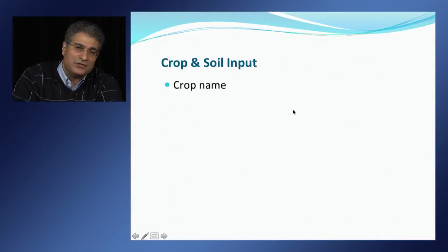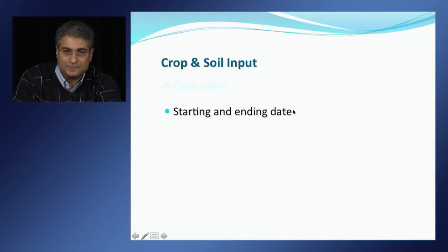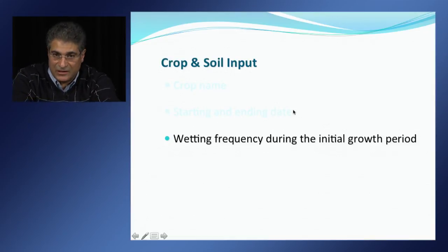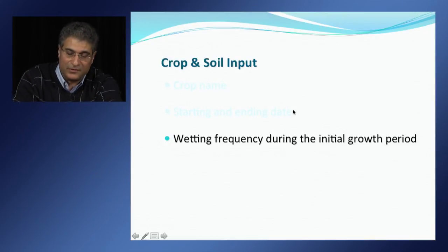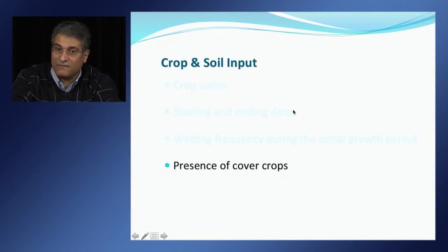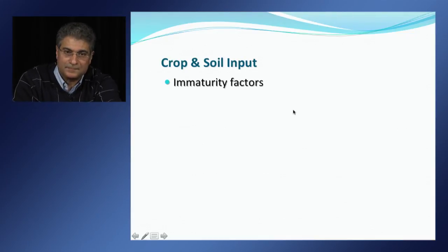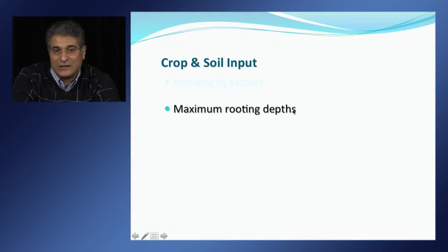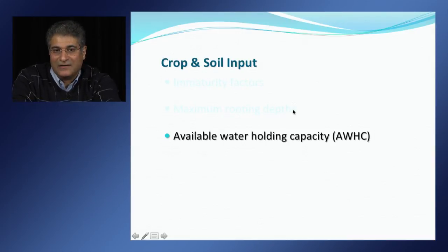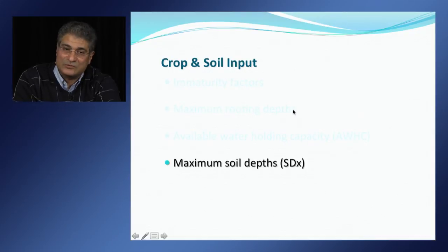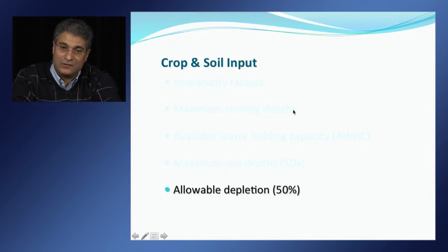Crop and soil information includes crop name, starting and ending dates, wetting frequency from rainfall during the initial growth period, presence of cover crop for tree and vine crops, immaturity factors, maximum rooting depth during the growing season, available water holding capacity, maximum soil depth, and allowable depletion.